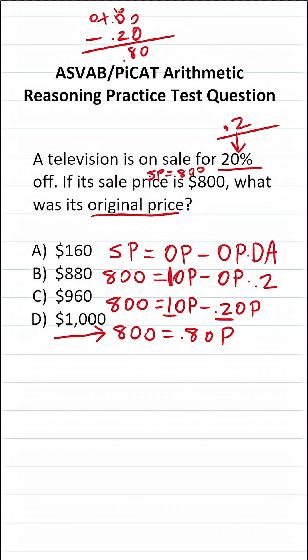To find the original price of this TV, all we have to do is divide both sides of this equation by 0.8. This crosses out, leaving us with the original price over here.